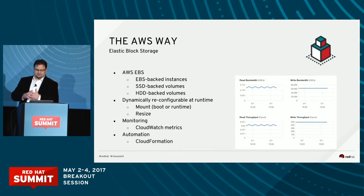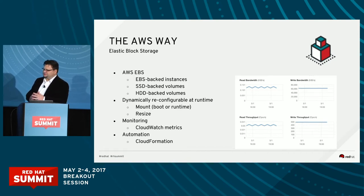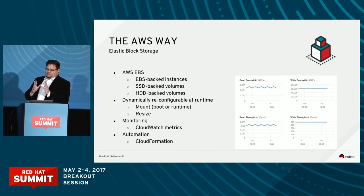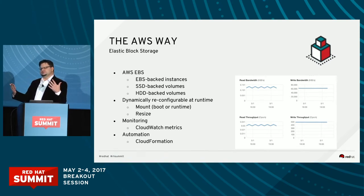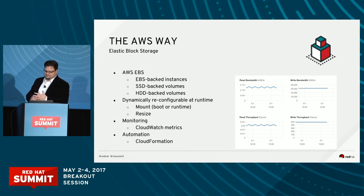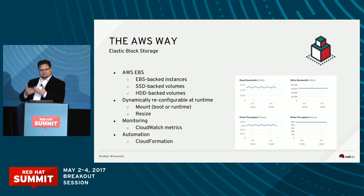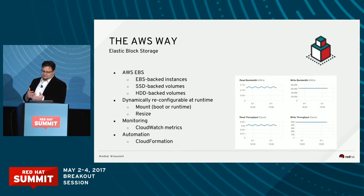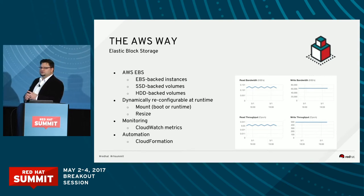Persistent volumes are what we care about here, and in AWS they are provided by the EBS — Elastic Block Storage — service. You can have EBS-backed instances where EBS is your boot volume, and regardless of what your boot volume is, at runtime you can attach additional EBS volumes. EBS volumes can be SSD or magnetic, and you can add volumes at runtime, which you cannot do with ephemeral storage — ephemeral volumes can only be attached at boot time.